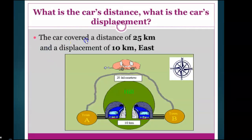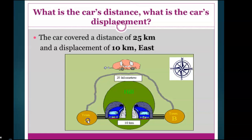Another example: a car covered a distance of 25 kilometers and a displacement of 10 kilometers. Going from town A to town B, the distance is 25 kilometers because you measure everything along the path — distance has no direction. For displacement, you measure from the starting point, town A, to the end point, town B, and the displacement is 10 kilometers. Since town B is located to the east, the answer is 10 kilometers east.